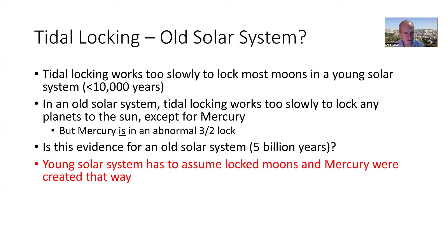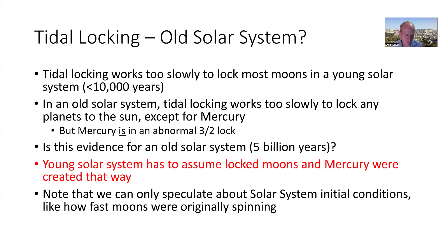For a young Earth creationist like me, we would have to assume that the locked moons and Mercury were created that way — there hasn't been enough time for tidal forces to lock a spinning moon. We can only speculate about initial solar system conditions, like how fast moons were originally spinning. Nobody really knows — and that applies to everybody.